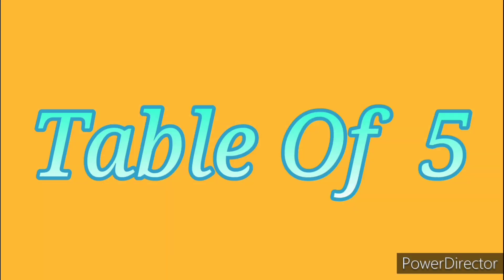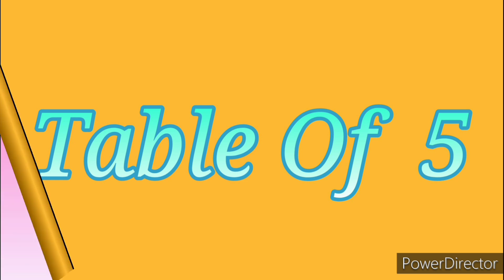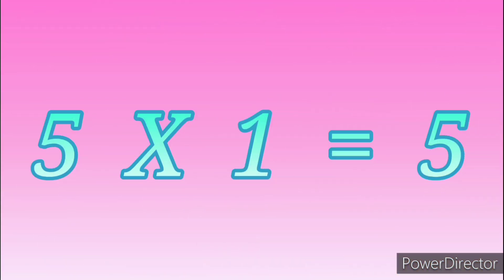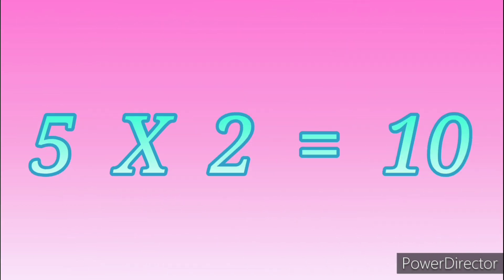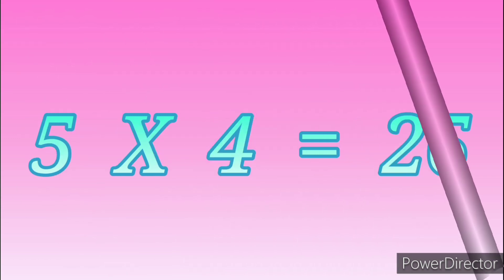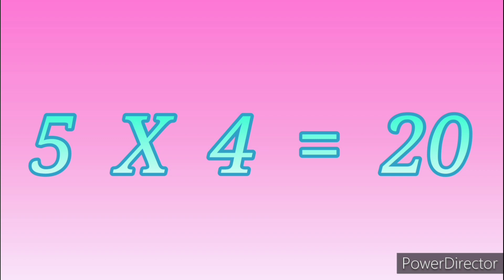Table of Five. Five ones are five. Five twos are ten. Five threes are fifteen. Five fours are twenty.